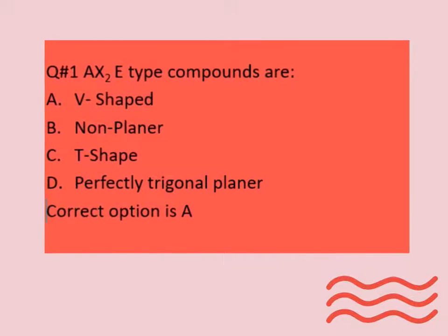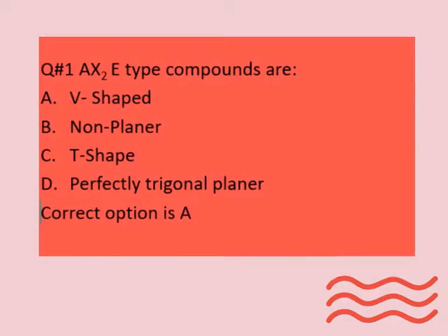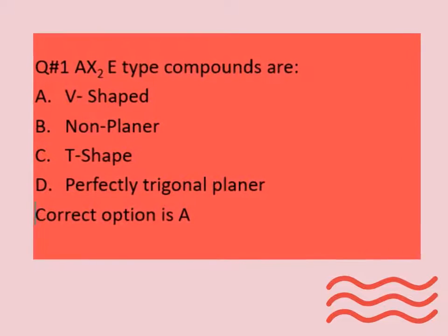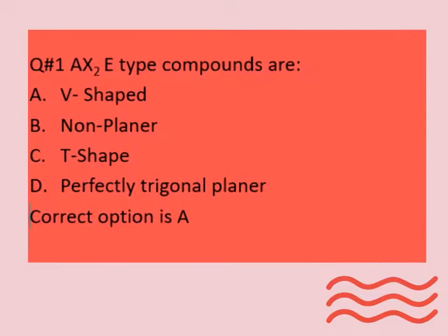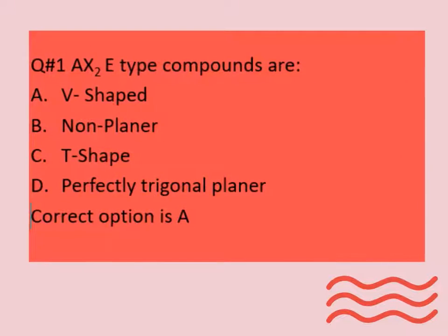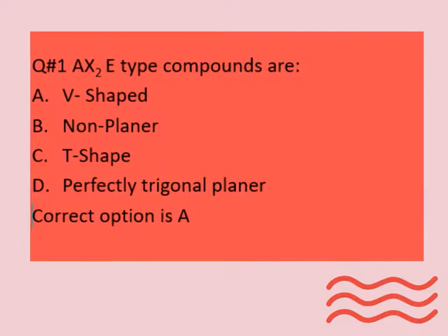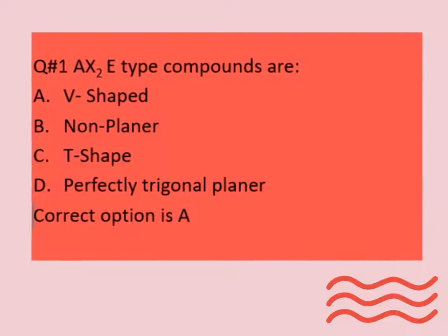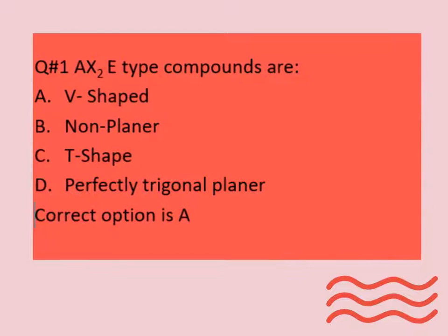Question number 1. AX2E-type compounds are? A. V-shaped. B. Non-planar. C. T-shaped. D. Perfectly trigonal planar. Correct option is A.